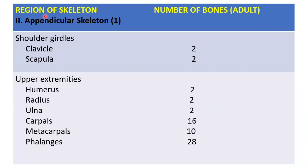Now the appendicular skeleton, part one: the upper limb. The shoulder girdles — clavicle (2) and scapulae (2). Upper extremities: humerus (2), radius (2), ulna (2), carpals (16, eight on each side), metacarpals (10, five on each side), and phalanges totaling 28.